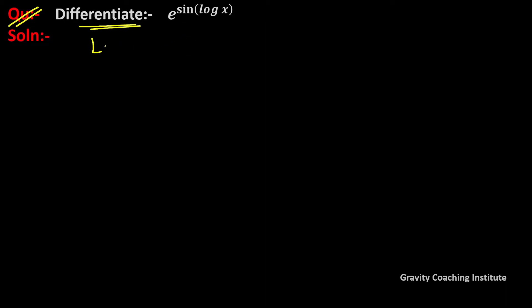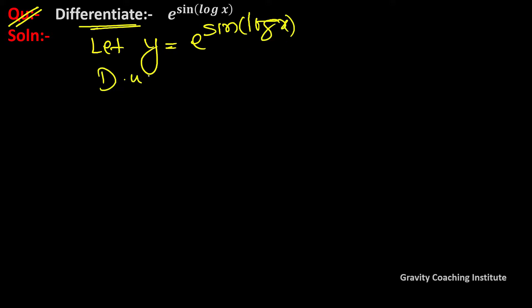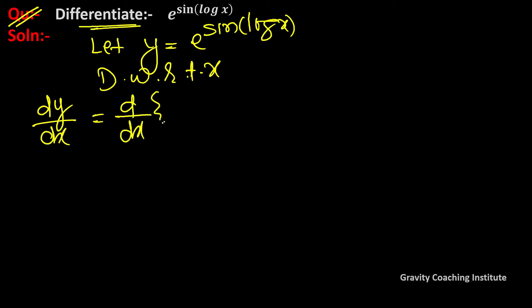Differentiate e to the power sin(log x). Let y equal to e to the power sin(log x). Now differentiate with respect to x, so dy/dx equals the derivative of e to the power sin(log x). Since it is a composite function, we use the chain rule.